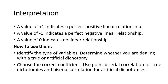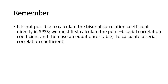Interpretation is like other correlation coefficients: a value of +1 indicates a perfect positive linear relationship, -1 indicates a perfect negative linear relationship, and 0 indicates no linear relationship. To use them: identify the type of variable, determine whether you are dealing with a true or artificial dichotomy, then choose the correct coefficient — use point biserial for true dichotomies and biserial for artificial dichotomies. Importantly, it is not possible to calculate the biserial correlation coefficient directly in SPSS. We must first calculate the point biserial and then use an equation or table to convert it.